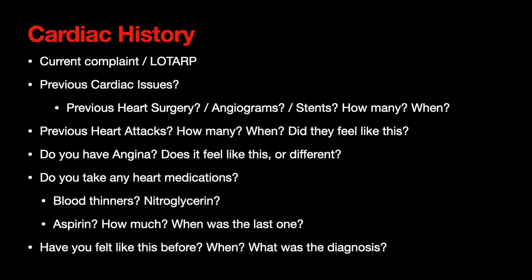For cardiac history: you've got someone with a complaint you suspect might be cardiac in nature — nebulous chest pain, or they're a little short of breath and gray. First, get a clear history of their current complaint and do a LOTARP or OPQRST assessment. Find out clearly: where is the discomfort, when did it start, has it been constant or does it come and go, does anything make it better or worse, what were you doing when it started, and on a scale of 0 to 10 how bad is it?